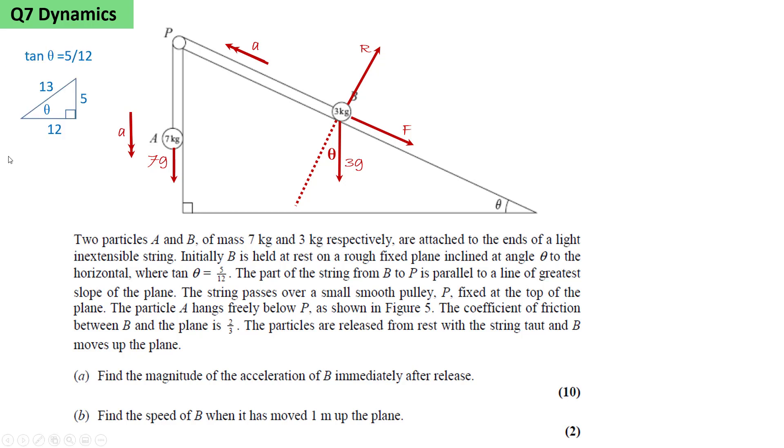We draw a right angle triangle with height 5 and base 12. We calculate the hypotenuse using Pythagoras and that's 13. From this we can read the sine and cosine of theta as 5/13 and 12/13 respectively.